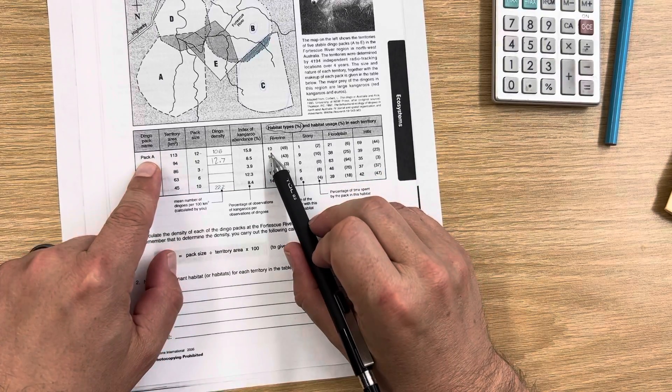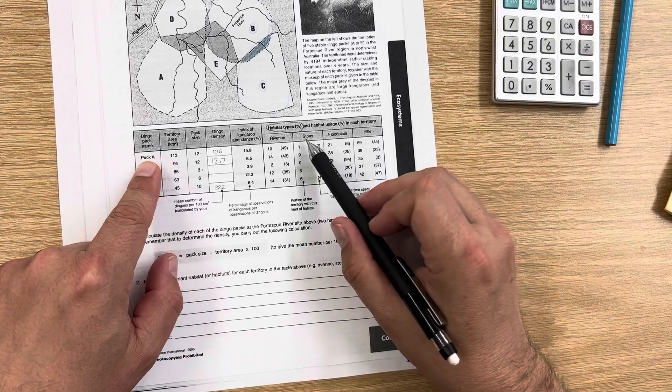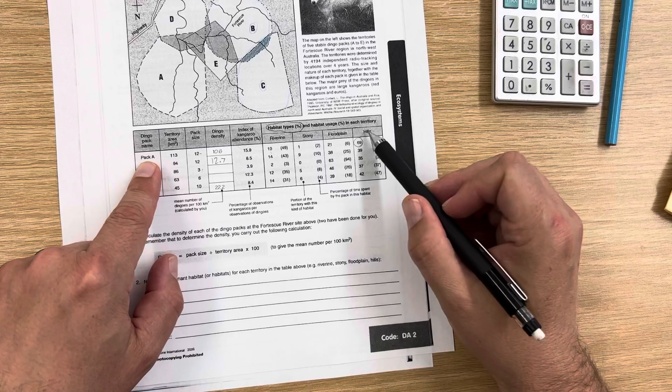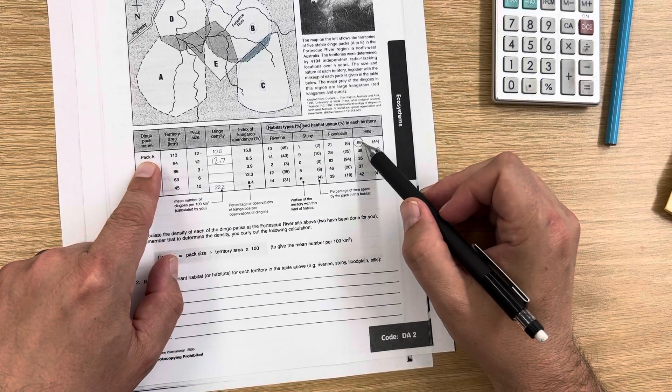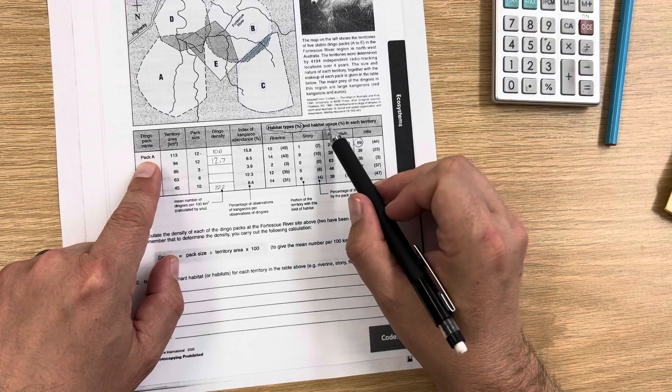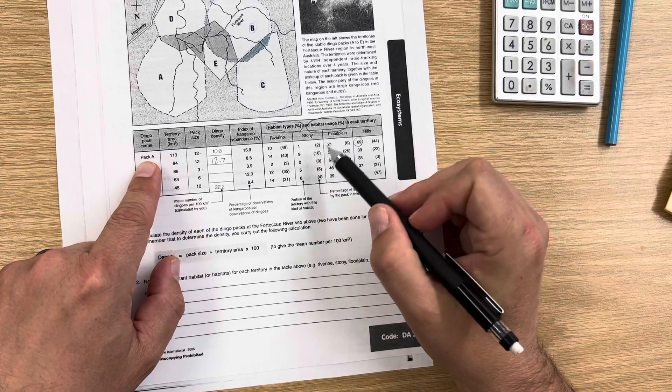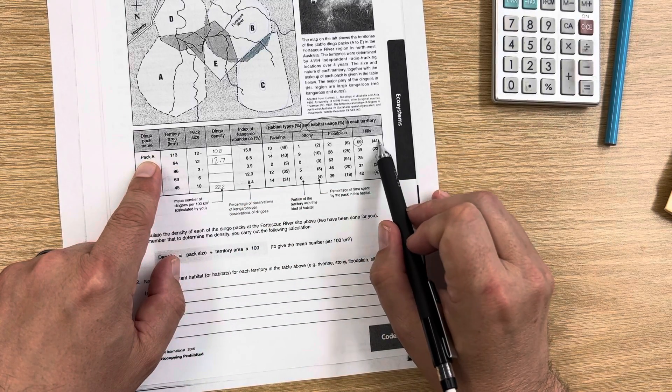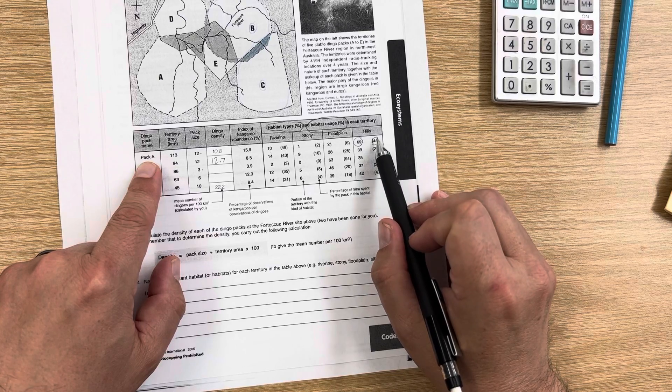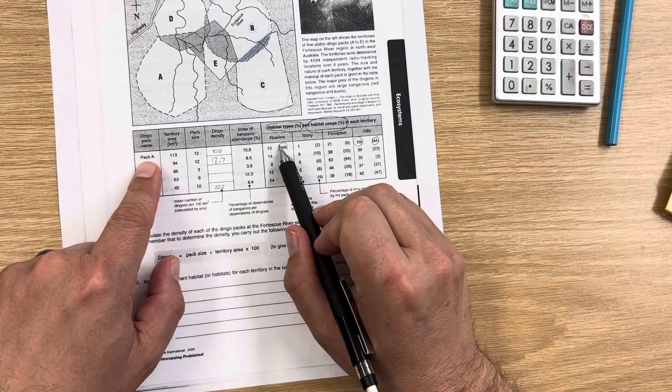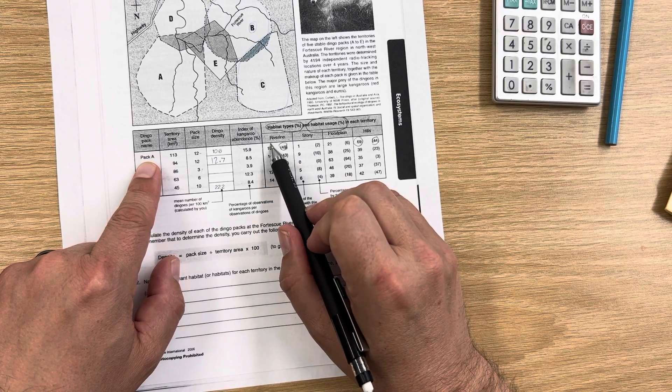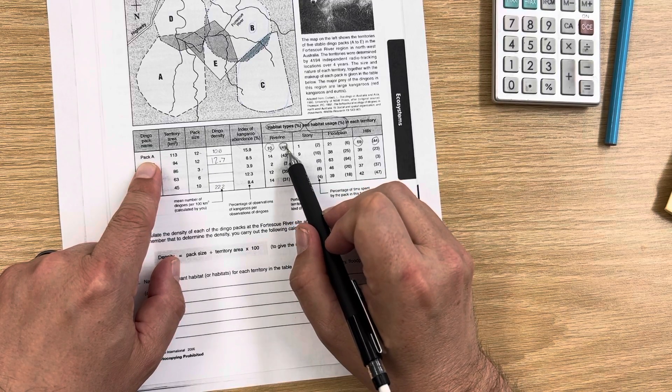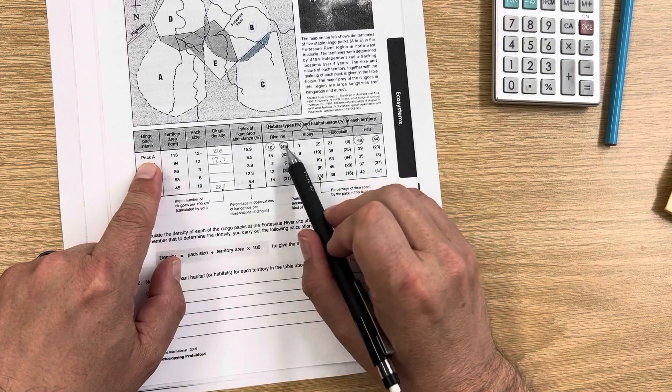So for pack A, 10% of their habitat is riverine, 1% is stony, 21% floodplain, and 69% hill. So that means in their territory for pack A, most of the territory is hill, 69%. But then it's got another number here, and it says the usage. So that's how often do they use that habitat. Pack A uses the hills about 44% of the time, which is a lot. But it actually uses the riverine system 49% of the time. So even though there's only 10% of the area is riverine, that actually gets used almost half the time by the pack.